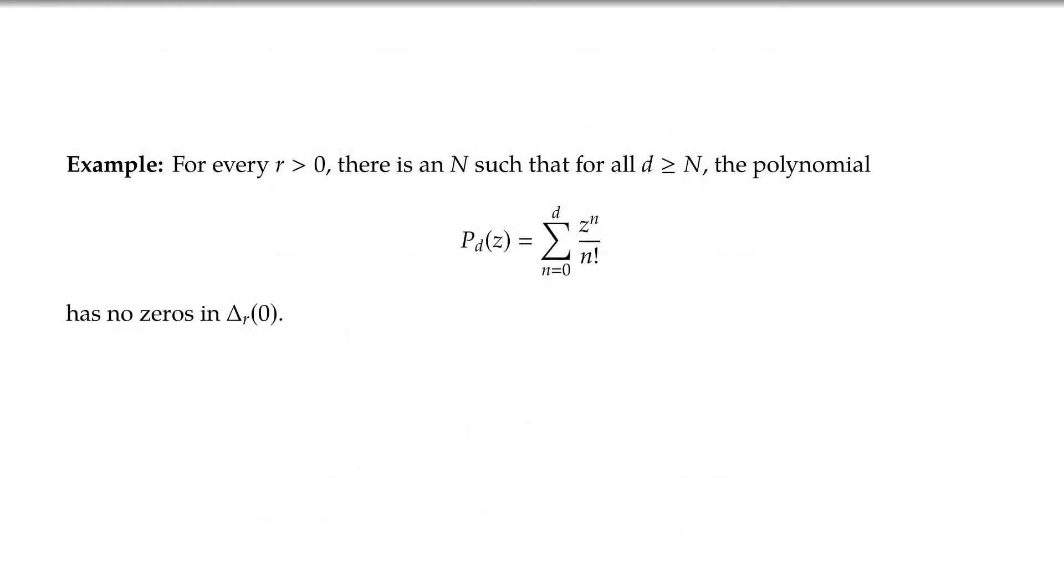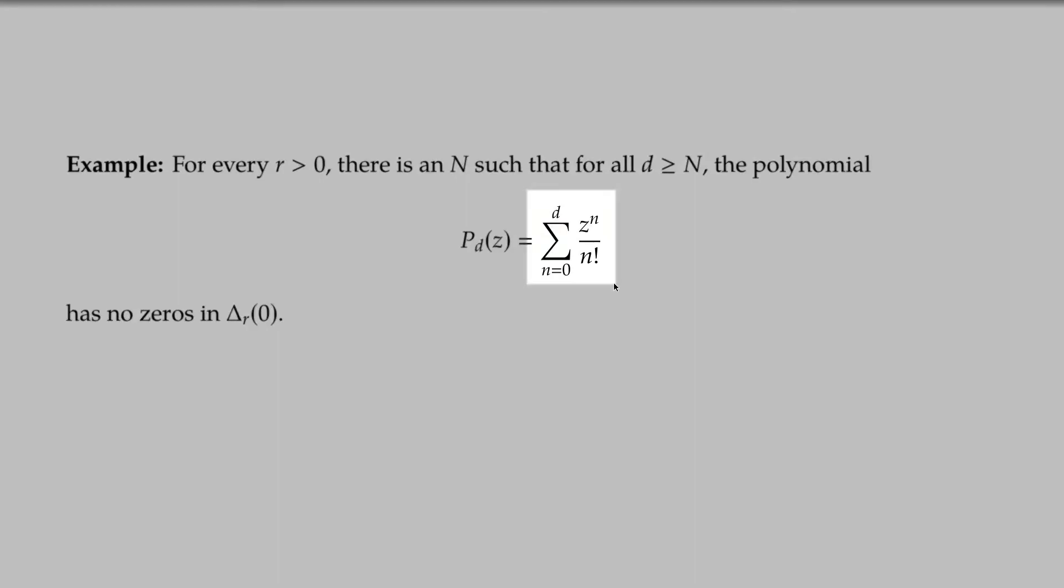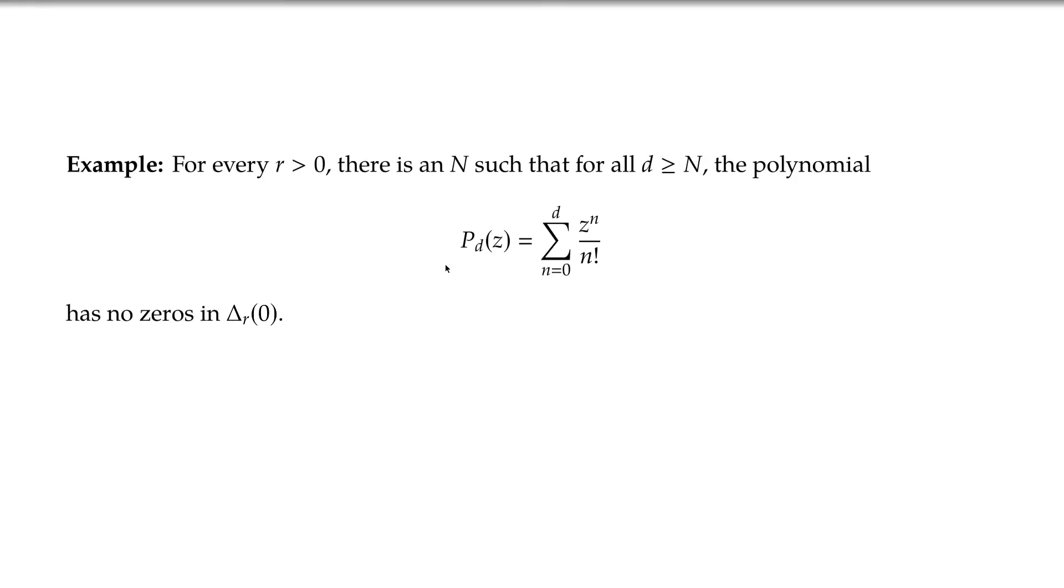All right, let's look at a simple example of something that we can say immediately. So for example, for every radius, every value of the radius, there is an N, such that for all d, this polynomial P_d has no zeros on the disk of radius R. So for every R, there is a capital N such that this is true. Why is that true? Well, P_d are the partial sums of the power series of e^z. e^z has no zeros anywhere. So looking at a given disk of radius R, we just apply Hurwitz, because the power series for e^z converges uniformly in compact sets in the plane, in the entire plane.